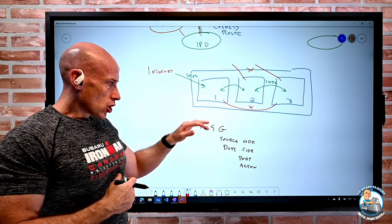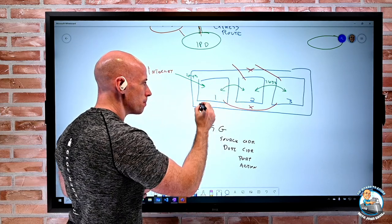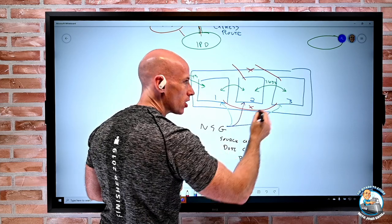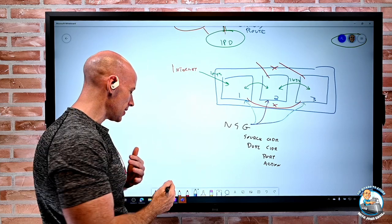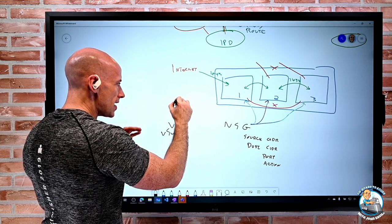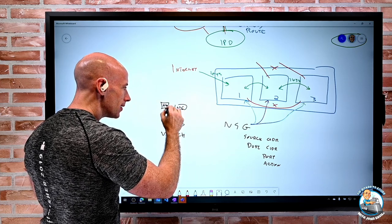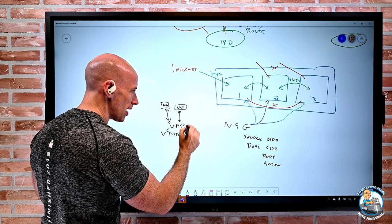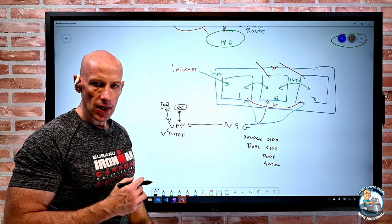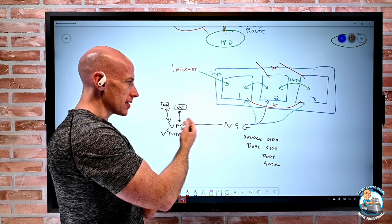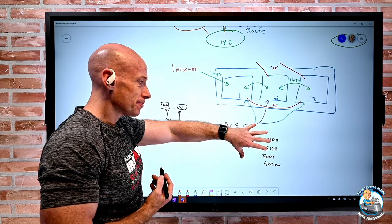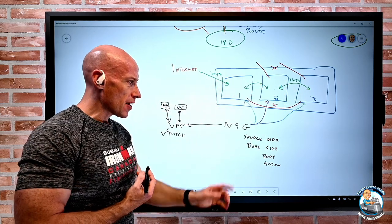NSGs control packet flow. They are not an edge device. I apply them at the subnet level for manageability. Underneath, there are Hyper-V hosts with a virtual switch and a virtual filtering platform — that's where rules are actually enforced, whether applied at the subnet or NIC level. So there's no point having rules at both subnet and NIC; you're doing the same check twice. With NSGs, I can completely control traffic flow based on IP addresses.